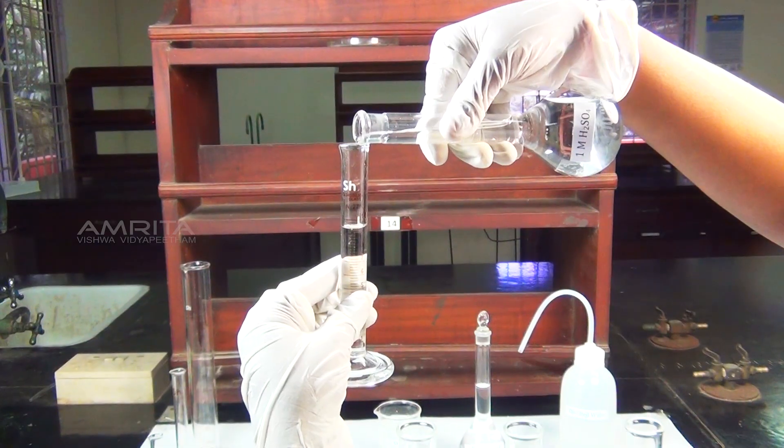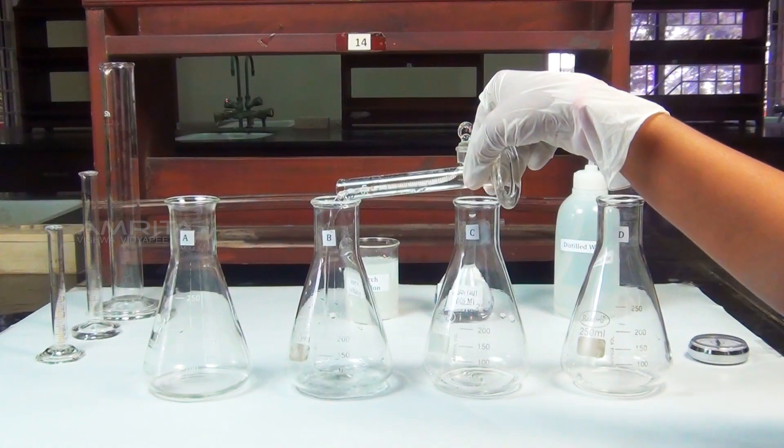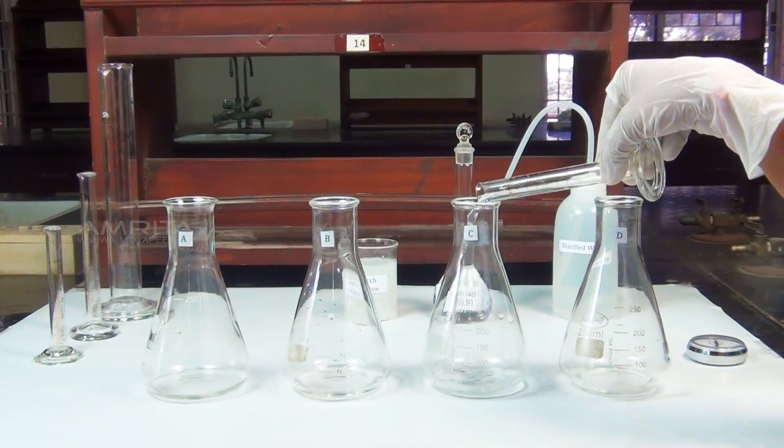Using another measuring cylinder, add 10 ml of 1 molar sulphuric acid to the flasks A, B, C and D.